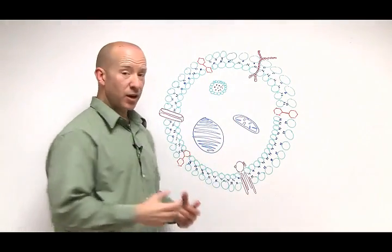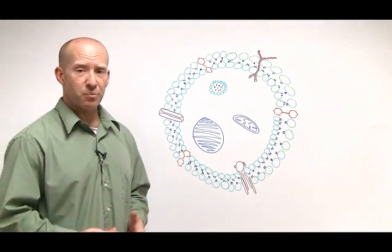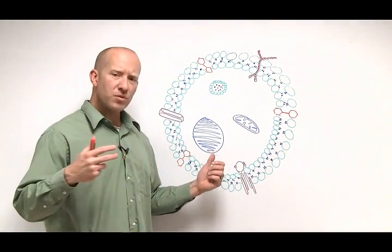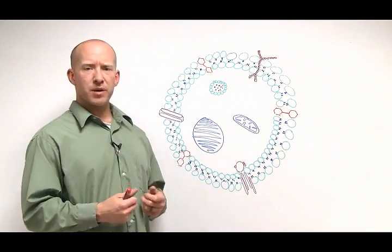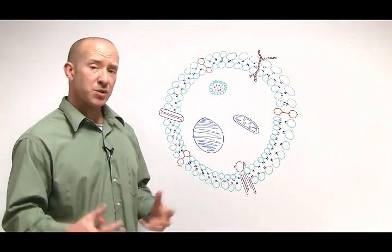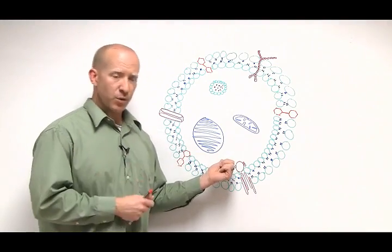On the inside, we have things like our nucleus. Our nucleus just makes stuff: proteins, enzymes, hormones, antibodies, neurotransmitters. If something's being manufactured in our body, our nucleus is at its very root.